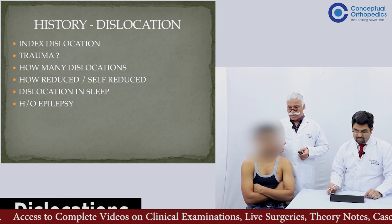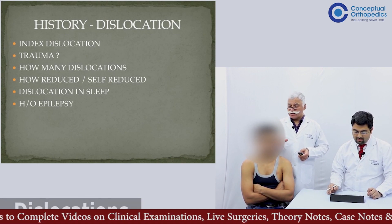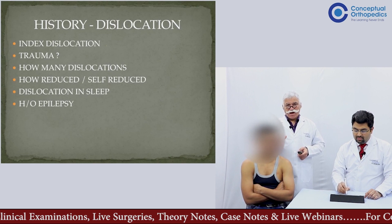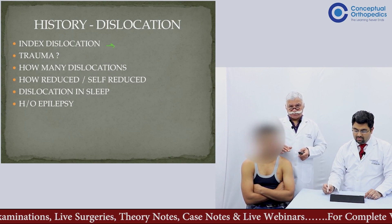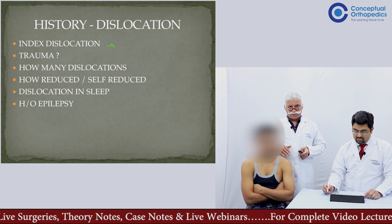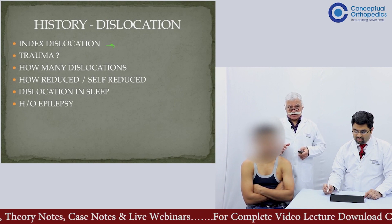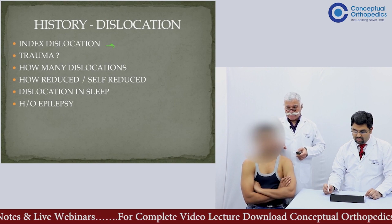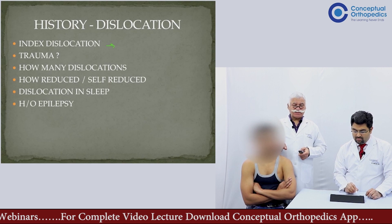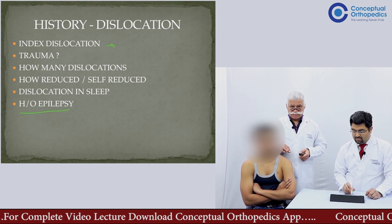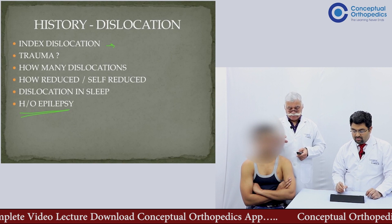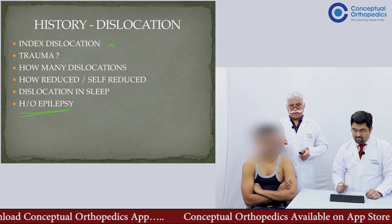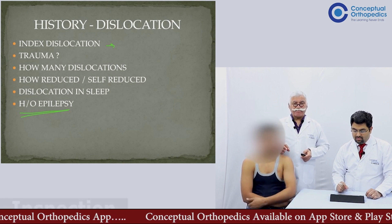When a patient presents with a history of dislocation, one must look at what caused the index dislocation — was it traumatic, was it a significant trauma? How was it reduced — was it reduced in a hospital or was it self-reduced? How many dislocations has the patient had? Does the patient ever get dislocation in sleep? And a very important history to ask in dislocation patients is a history of epilepsy. These factors influence the treatment course for the patient.